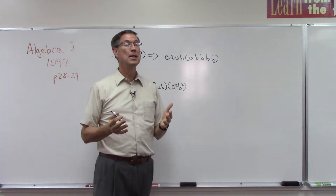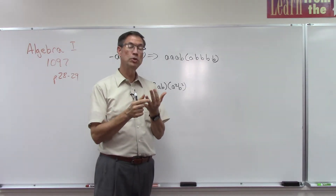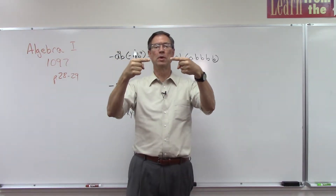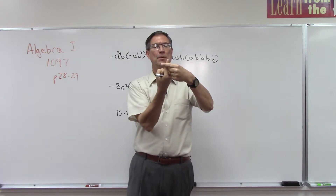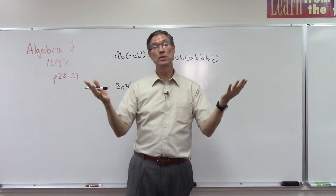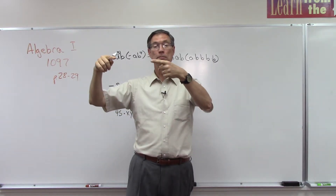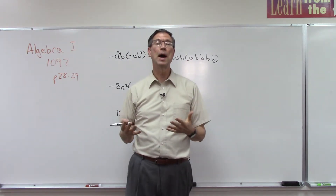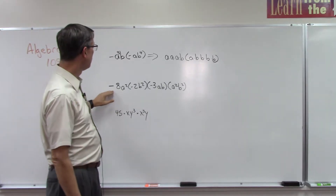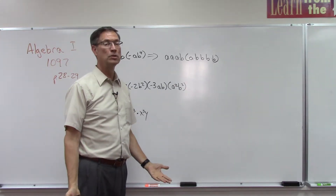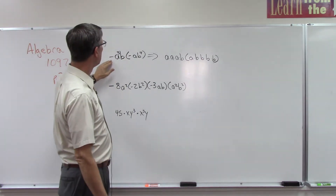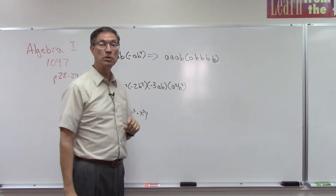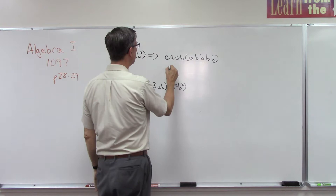Do you remember from our lesson about positive and negative numbers that if we're multiplying and we have two of the same — two negatives — that actually makes a positive? If you have several negatives, say five, every pair of negatives becomes a positive and one is left over, so the answer is negative. An odd number of negatives makes it negative. Looking at this next problem: one, two, three negatives — the answer will be negative. Here I only have two negatives, so a negative times a negative makes the answer positive.